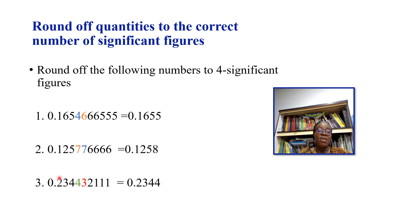For 0.234431, rounding to 4 significant figures: count 2, 3, 4, 4 — the next digit is 3, which is less than 5, so we round down and stop. The answer is 0.2344.